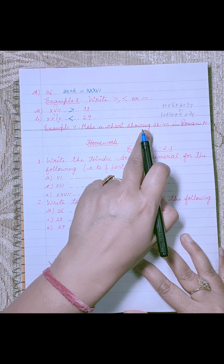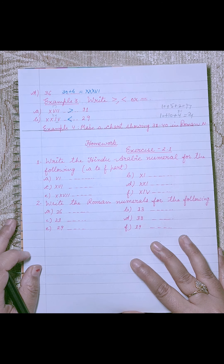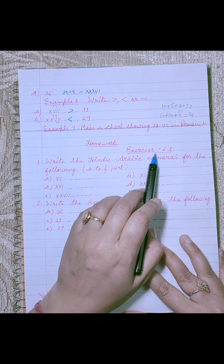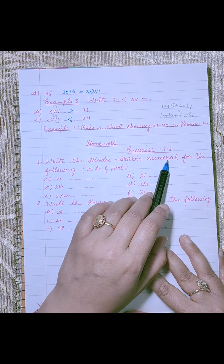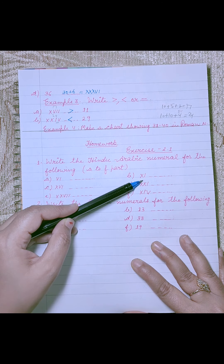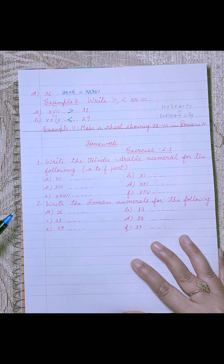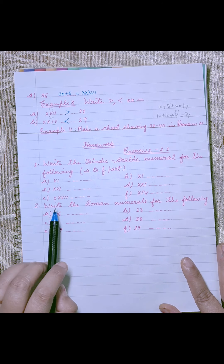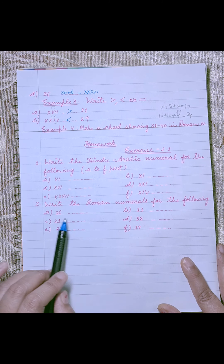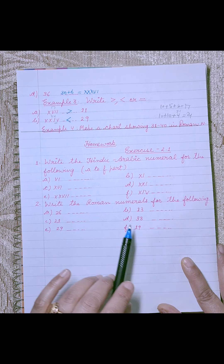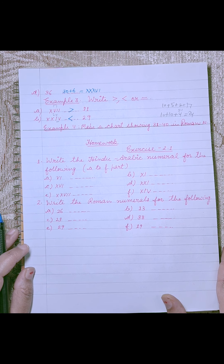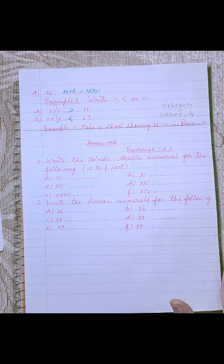Make a chart showing 31 to 40 Roman numerals — you will do it yourself. For homework, do exercise 2.1: first, write the Hindu-Arabic numeral for the given Roman numerals (parts A to F); second, write the Roman numerals for the given Hindu-Arabic numbers (parts A to F). Understand these concepts clearly and then write it in your notebook. Thank you.